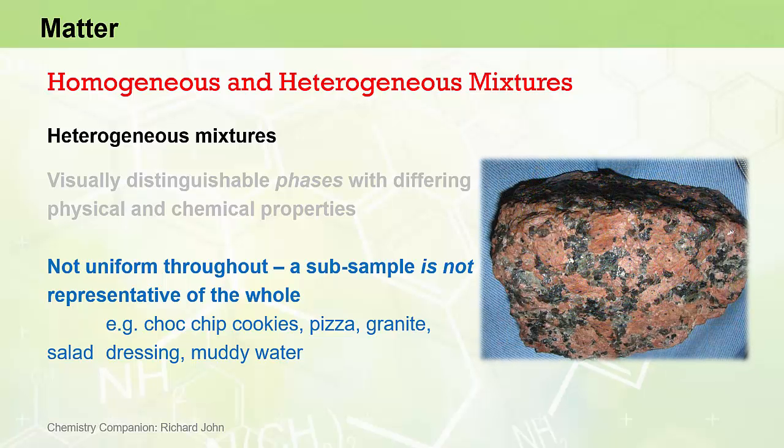Granite is another example with its familiar granular structure containing white quartz, orange feldspar, and darker colored mica. Each phase is visually distinguishable and has its own set of physical and chemical properties. We could use a simple physical process to crush or grind this granite to isolate a piece of quartz, for example, as a way of separating this heterogeneous mixture into its constituent components.